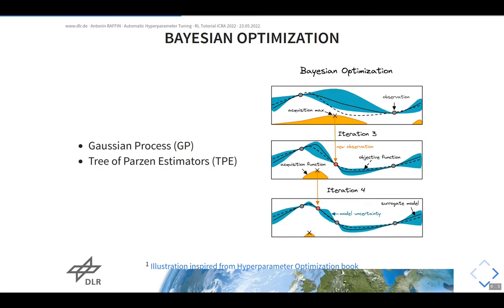The second part is defining the model: sample the hyperparameters, train the model, and return the final performance to Optuna. You start with default hyperparameters, update them using the sampling function, instantiate the algorithm with those hyperparameters, instantiate the callback, and call the learn method with the maximum budget. Because a callback is passed, training may terminate early. If the trial is pruned, you tell Optuna it was pruned; otherwise you report the last mean reward as your objective function value.